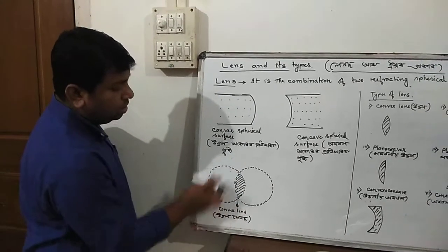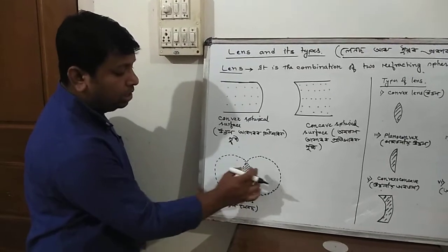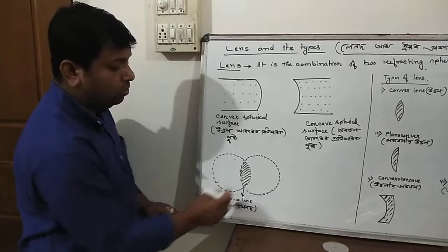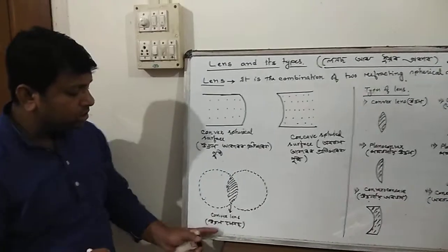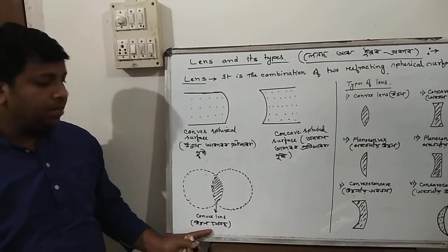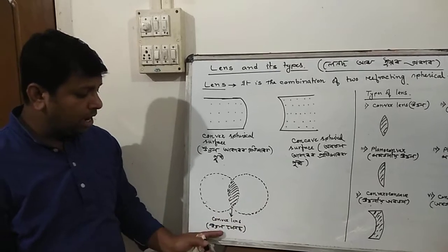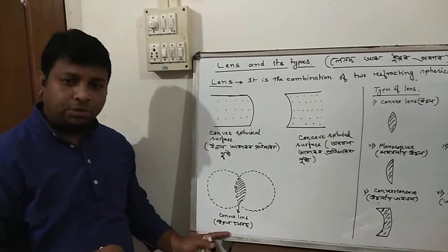This is convex, that is uttal lens, that is convex spherical surface. When we combine these two convex surfaces, that is potikhar, we get an uttal lens. This forms an uttal lens or convex lens system.